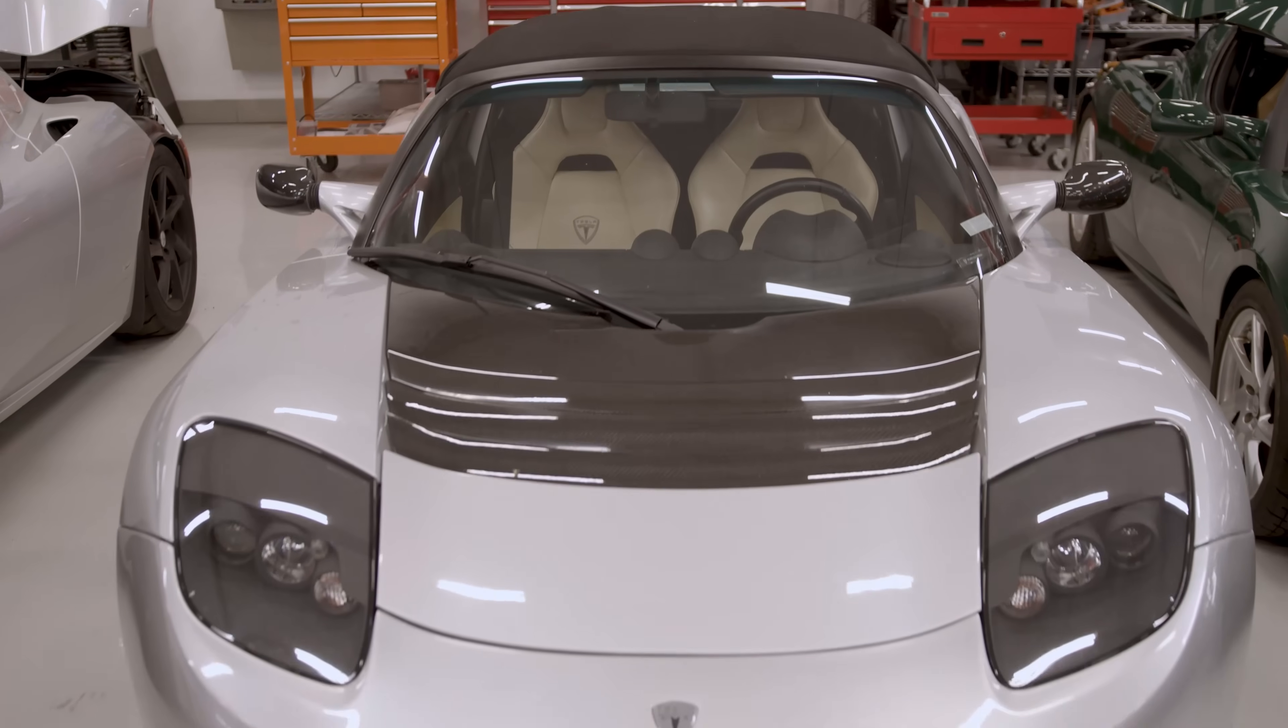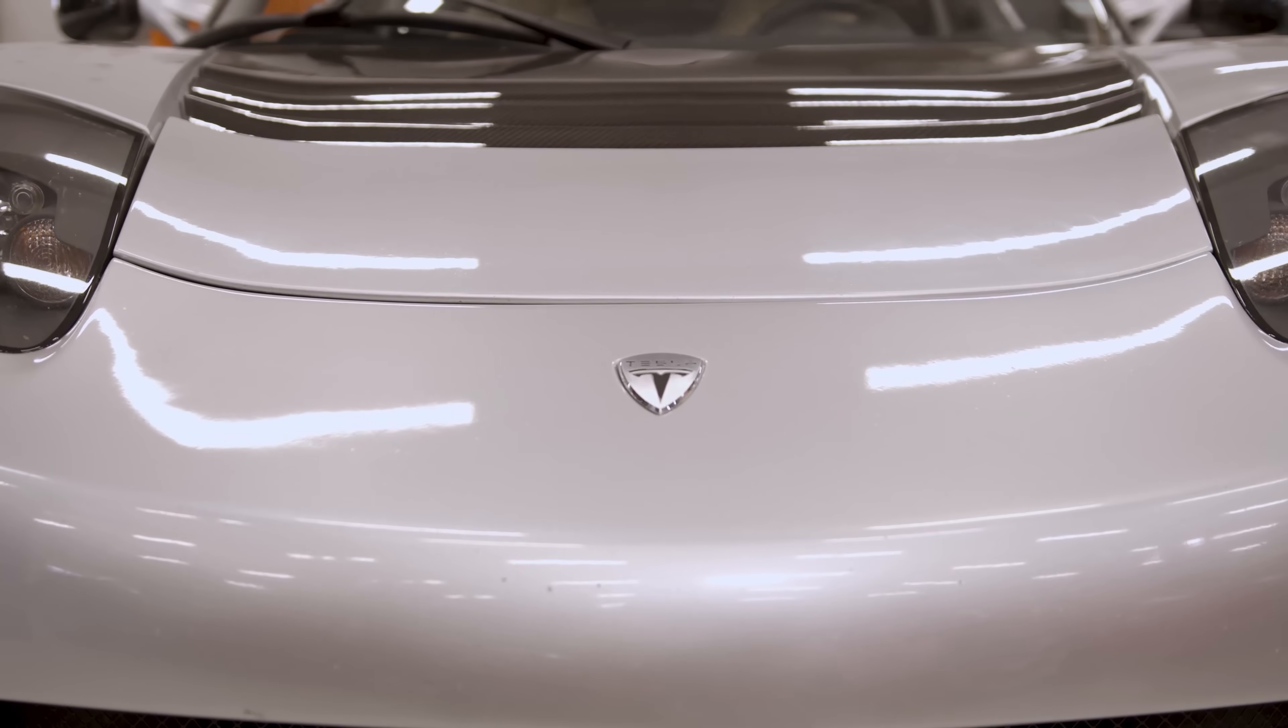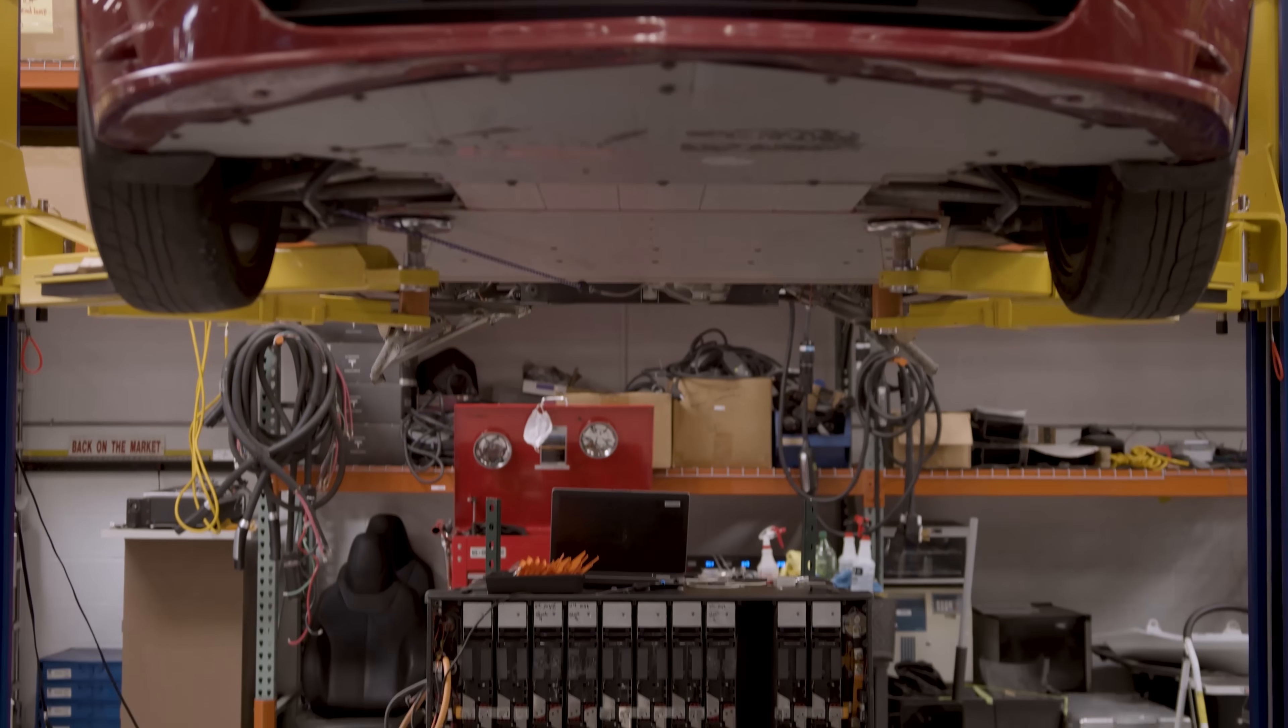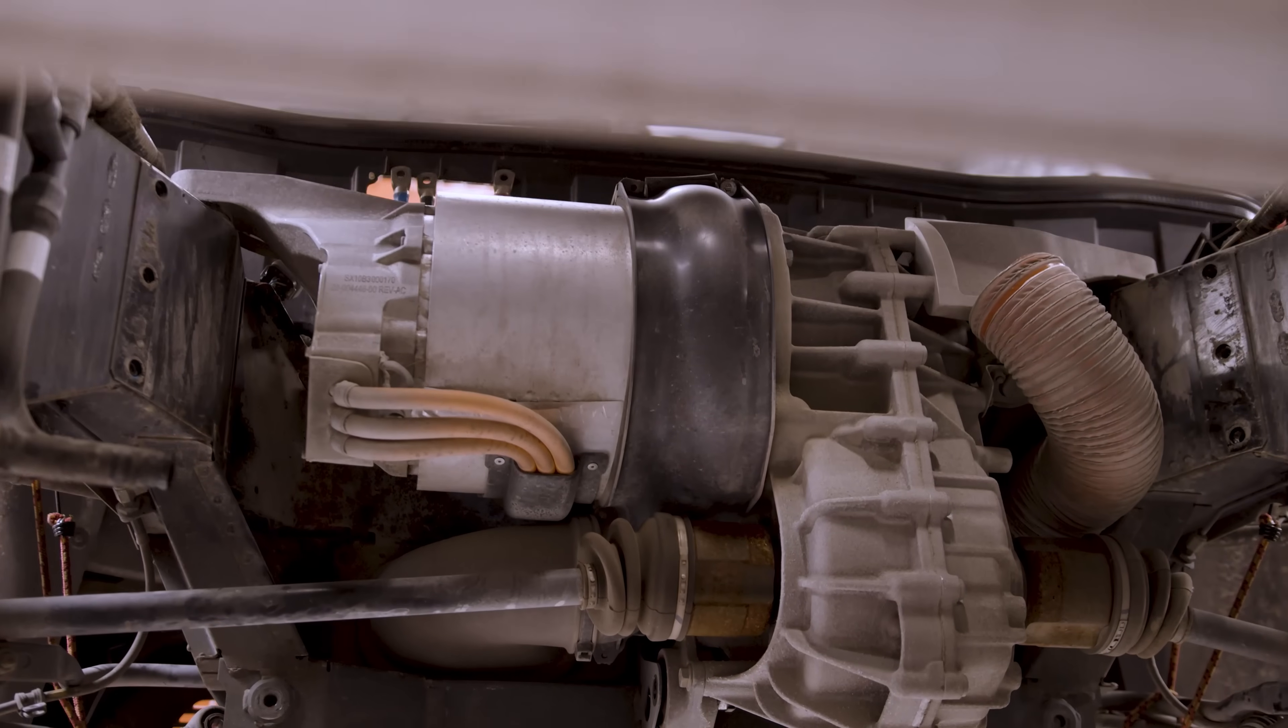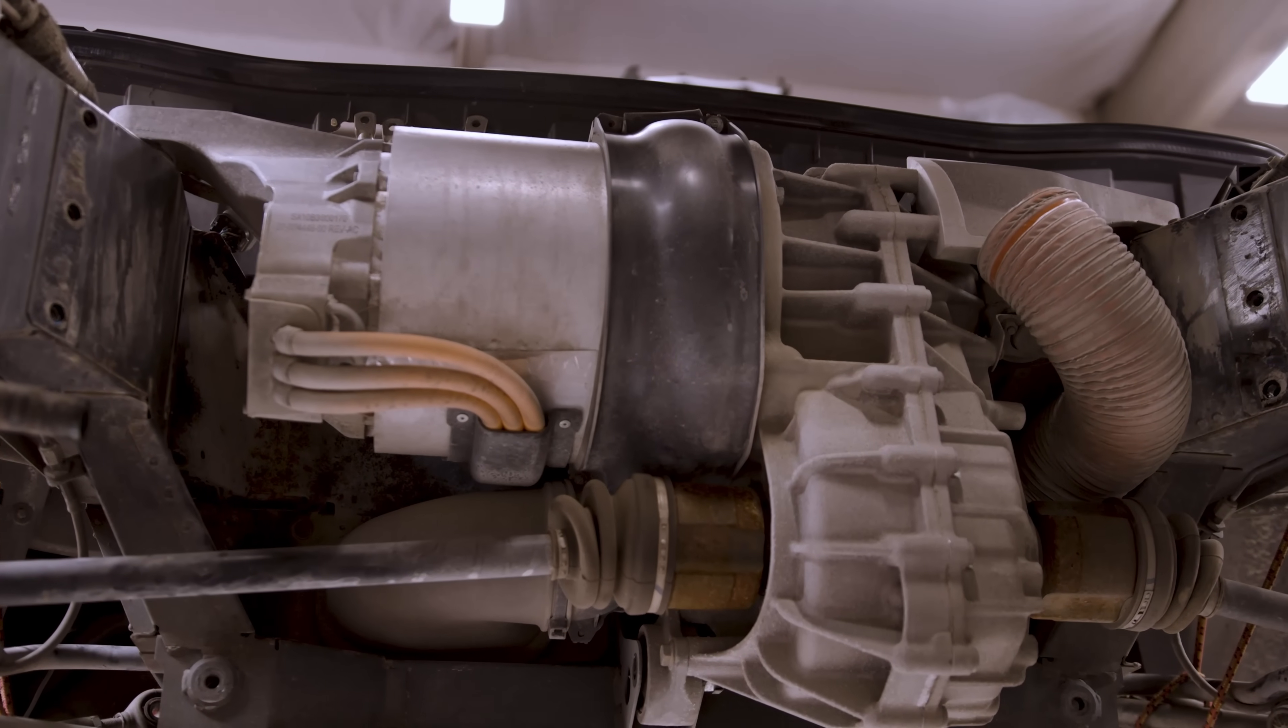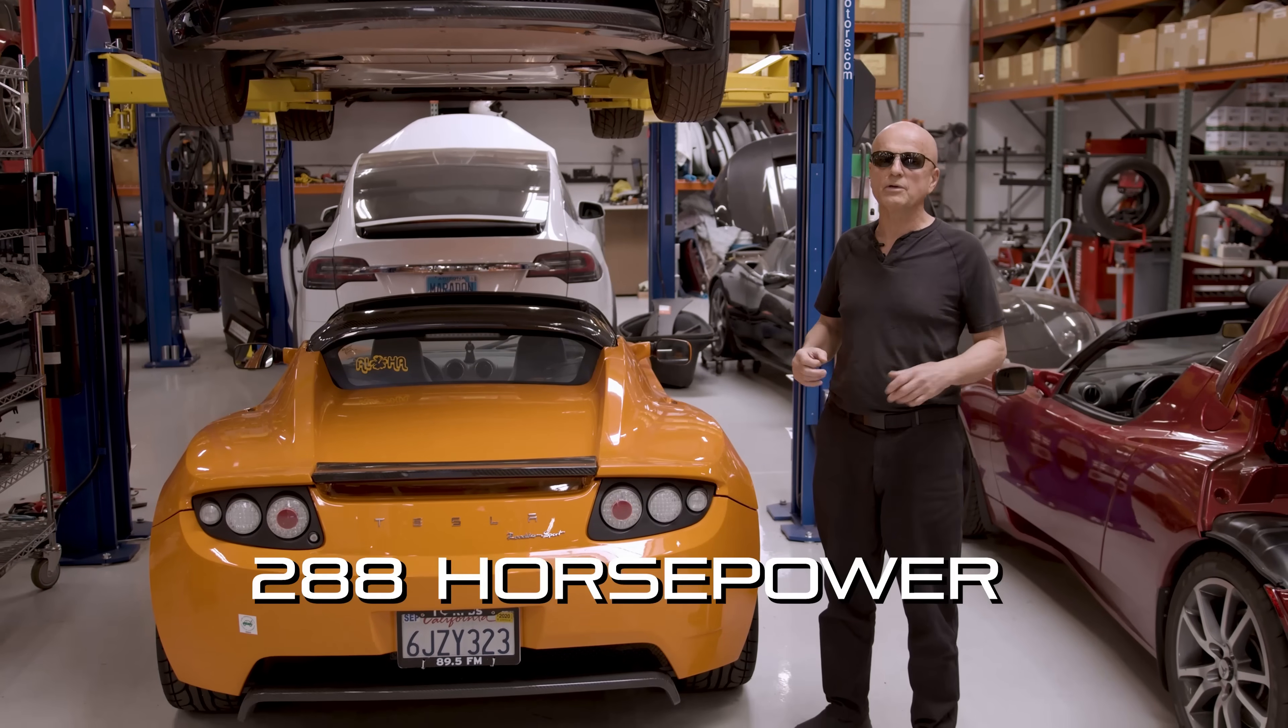The Tesla Roadster was a motorless Lotus Elise chassis with a thousand pound battery system jammed inside the car with a crock pot sized three phase AC induction motor that cranked out 288 horsepower.